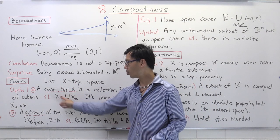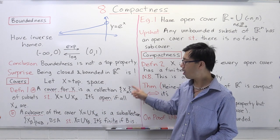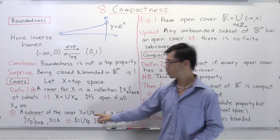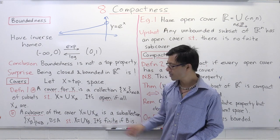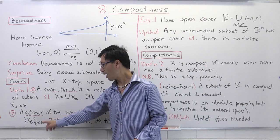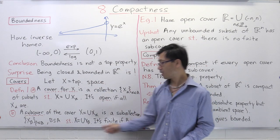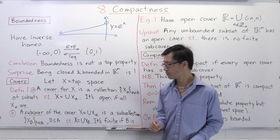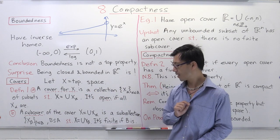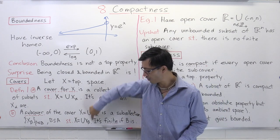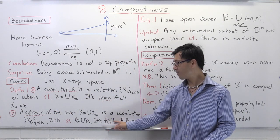Given such a cover — open or not — where X equals the union of X_alpha, we can ask for a sub-cover. That means we pick out some of these X_alphas, say X_beta as beta ranges through some subset B of A, such that that sub-collection is also a cover: X equals the union of those X_betas. We say this sub-cover is finite if the set B is finite.